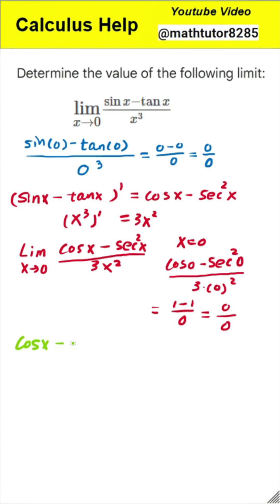Next step, second application of L'Hopital's rule. Let's repeat the process. The derivative of our new numerator, cosine of x minus secant squared of x, is negative sine of x minus 2 times secant squared of x times tangent of x. The derivative of our new denominator, 3 times x squared, is 6 times x.